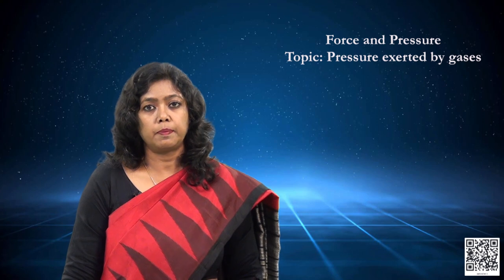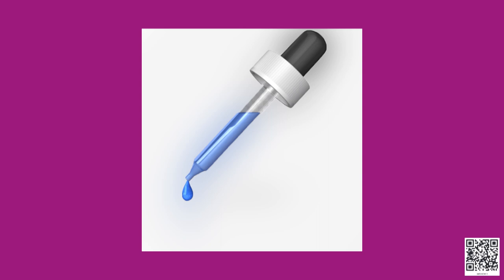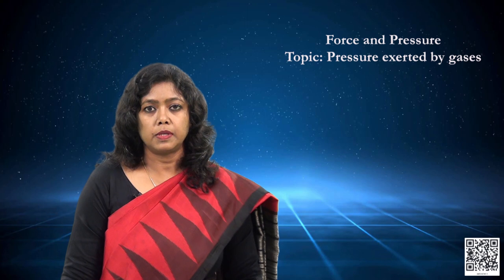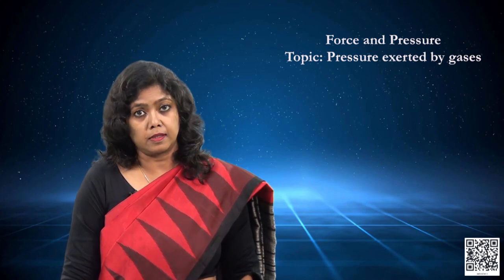Another common example is a dropper. We have droppers in medicine bottles and various places. We press the rubber tip of the dropper and liquid enters the tube. It all works because of the difference in pressure inside the tube and the atmospheric pressure outside. But the main question is: how much pressure does the atmosphere exert? Is it very large, and can we measure it?